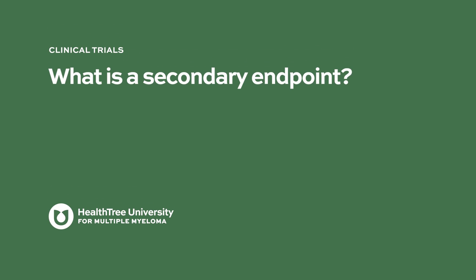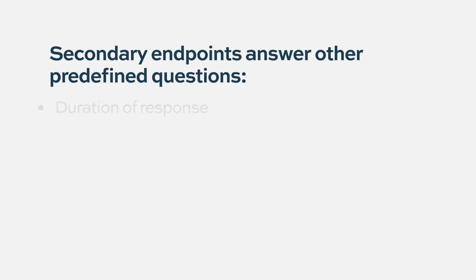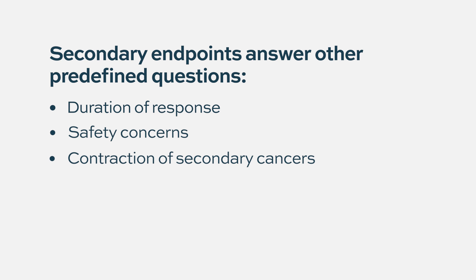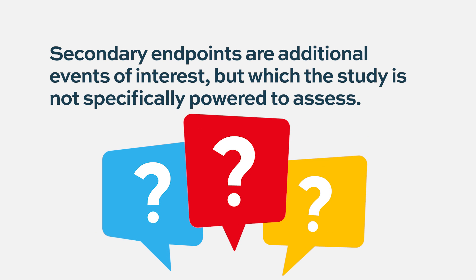Secondary endpoints are not the primary endpoint but are considered of interest, and they are all set up beforehand to be statistically valid. Often a primary endpoint is overall survival for a new therapy, but it may also be of interest to know how long the average person stays in remission — so duration of response may be a secondary endpoint. You may also be concerned about safety issues, or whether a certain number of patients develop secondary cancers — that may be a secondary endpoint. However, from a statistical standpoint, you can only have so many, or you have to keep expanding how many patients are in your trial, so you have to pre-define those to be statistically valid.